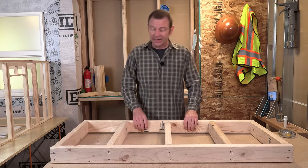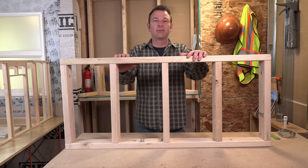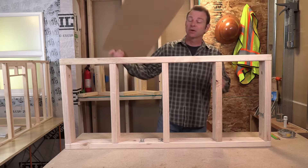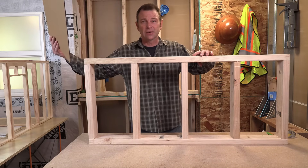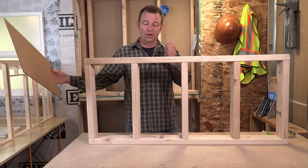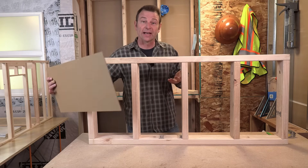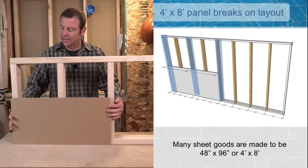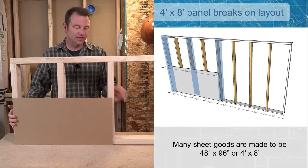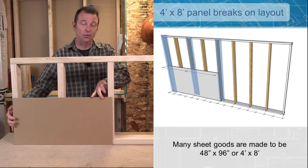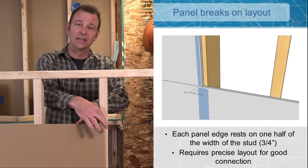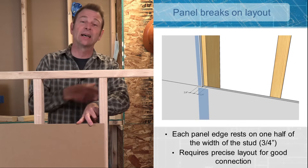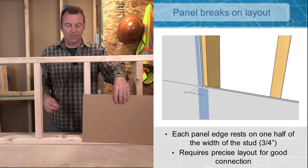I've got a mini example of a wall here — it's scaled down — and I have a piece of cardboard that will illustrate how a panel should break on a regular layout on studs. So this would represent my drywall or my OSB sheeting, and if it were to be fastened to this wall, if the layout is correct, it should break on the center of this stud.